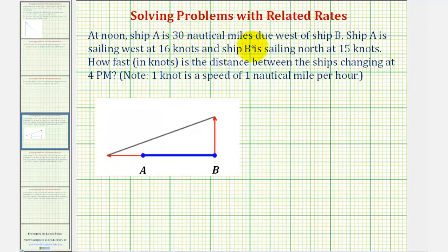At noon, ship A is 30 nautical miles to west of ship B. So if this is ship A and this is ship B, the distance between the two ships would be 30 miles.